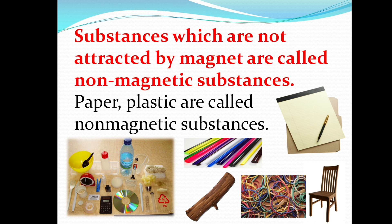What are all the magnetic substances? The magnetic substances are iron, nickel, and cobalt. What are the non-magnetic substances? The non-magnetic substances are paper, plastic, wood, and rubber.